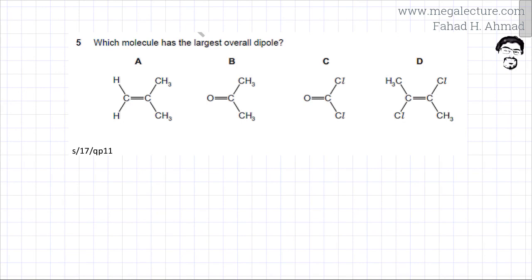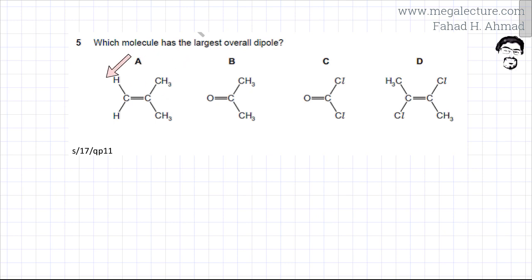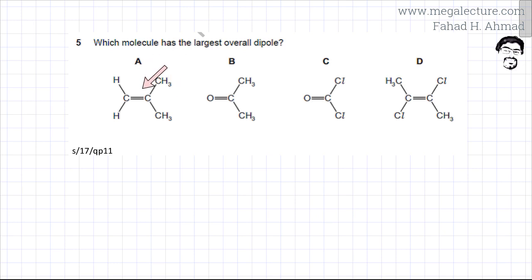Let's first look at option A. Option A only has carbon and hydrogen atoms. Carbon and hydrogen have almost similar electronegativity, so the electrons are going to be evenly distributed between the atoms — they are not going to be closer to any one atom. Therefore, this molecule is not going to have any overall dipole.